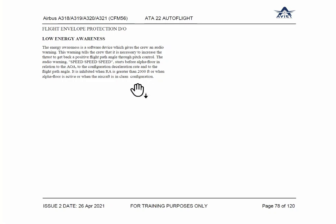Above 2000 feet the warning will not come, and it will also not come if the aircraft is in clean configuration. During takeoff and landing the aircraft will never be in clean configuration — that is certain. Below 2000 feet the aircraft cannot be in clean configuration; it has to be either nose up or nose down.